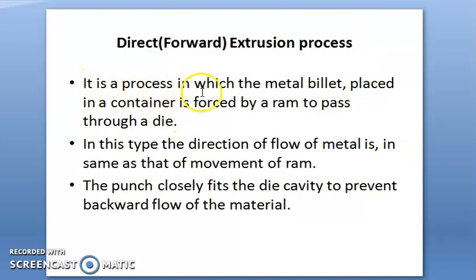It is the process in which the metal billet is in hot metal placed in a cylindrical container that is forced by a plunger or ram to pass through a die. Then we get the desired object. In this type, the direction of flow of metal is the same as that of movement of ram. The punch closely fits the die cavity to prevent backward flow of the material.